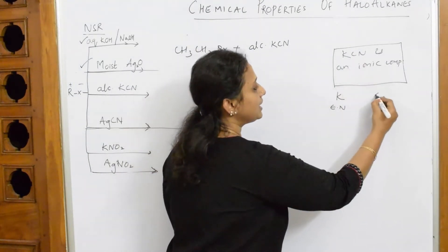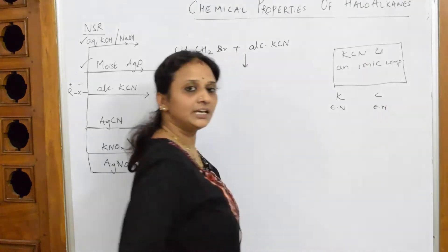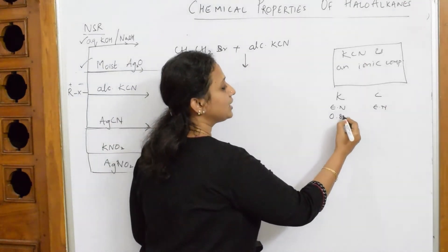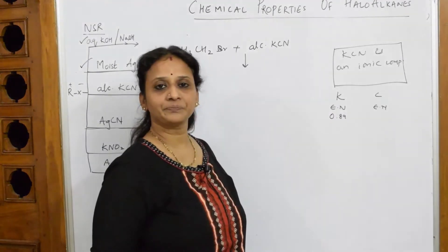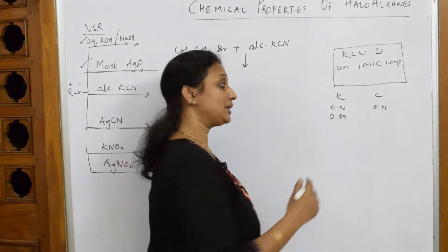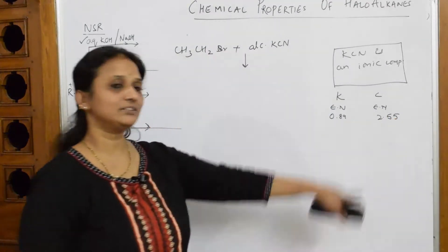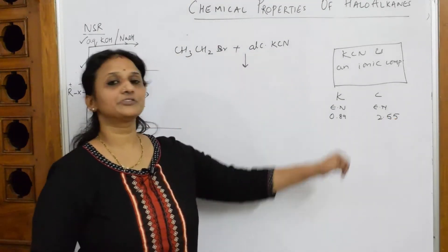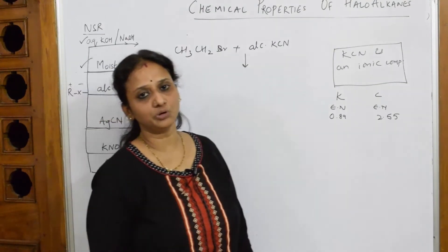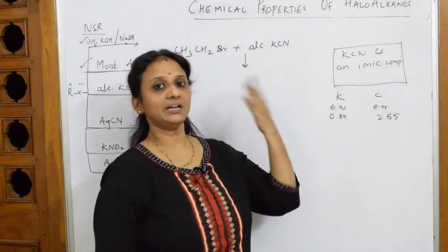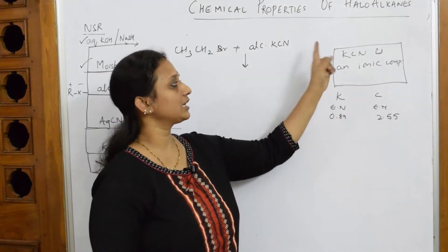What do I mean by ionic compound? Potassium electronegativity is almost 0.89 on the Pauling scale. When I come to carbon electronegativity, it is 2.55. Are you finding the difference? There is a difference between the electronegativities of both. So as this is dissolved, immediately it's going to break up into K+ ion and CN- ion.